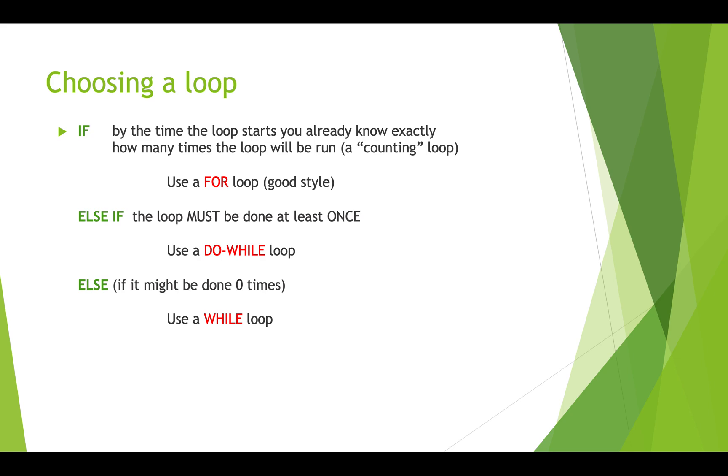If that's not true, then we have to look at other options. So if we don't know how many times we need to iterate, then we're going to either use a while loop or a do while. If the loop has to be done at least once, if the body of the code in the loop has to be done at least once, then we're going to use a do while loop.